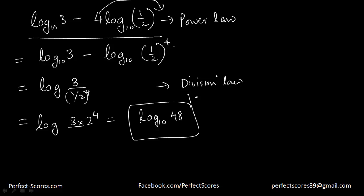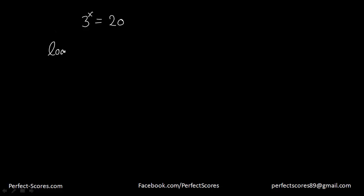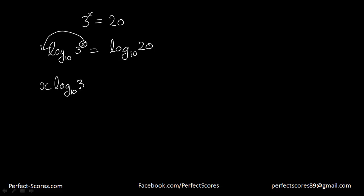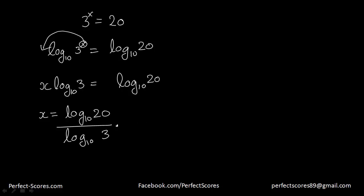Let's see another similar question. Let's suppose if we want to find 3 to the power x equals 20 and we need to find the value of x. What we can do is take log base 10 on both sides. Using the power law, we bring x out front: x times log base 10 of 3 is equal to log base 10 of 20. So x is going to be equal to log base 10 of 20 divided by log base 10 of 3. Putting this in the calculator or using log tables, this is going to be equal to approximately 2.73.